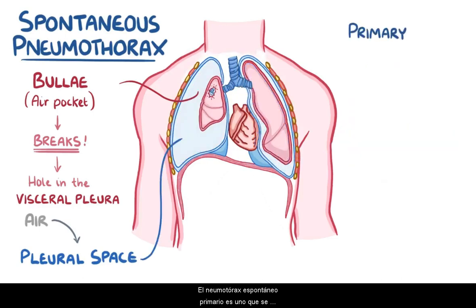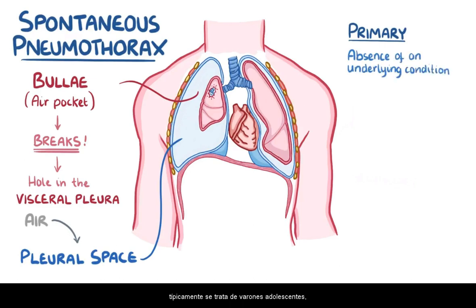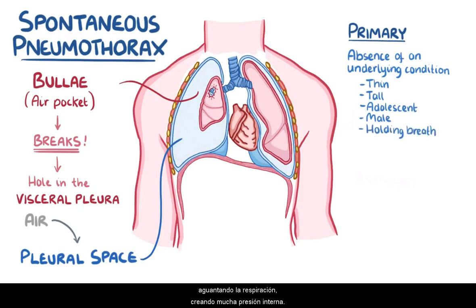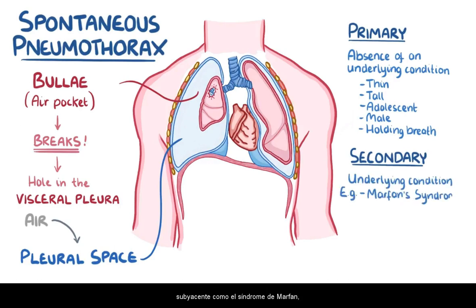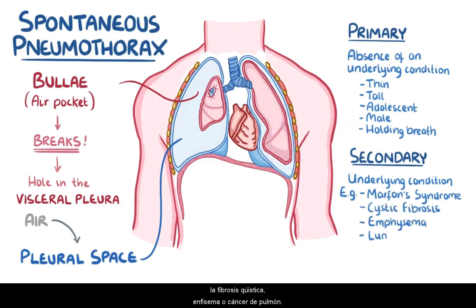A primary spontaneous pneumothorax is one that develops in the absence of an underlying condition. Most typically, it's a thin, tall adolescent male who's holding his breath, creating a lot of internal pressure. A secondary spontaneous pneumothorax is one that develops in someone with an underlying lung disease, like Marfan syndrome, cystic fibrosis, emphysema, or lung cancer.